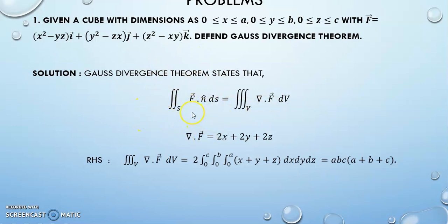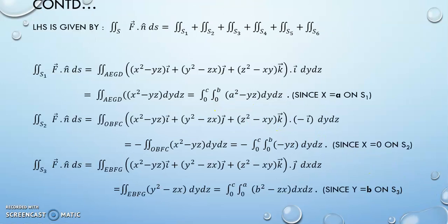That value I will be getting as my surface integral value. So just observe, what is my surface integral? F vector taken with the dot product of n cap ds. You should know how to calculate the n cap. It is very easy to calculate n cap.